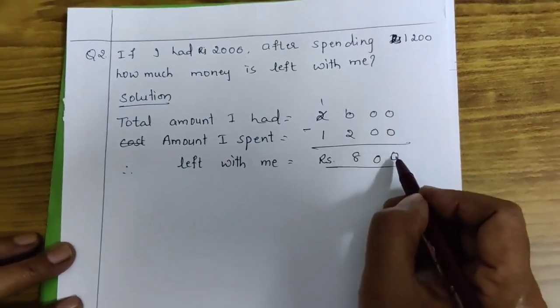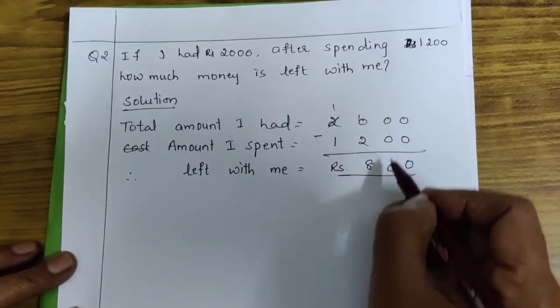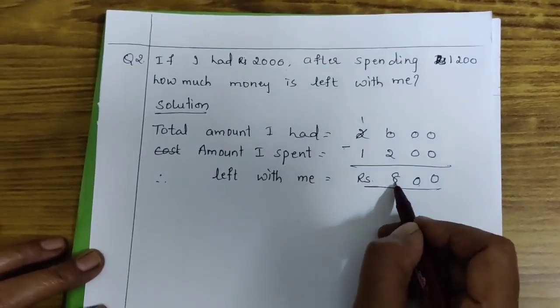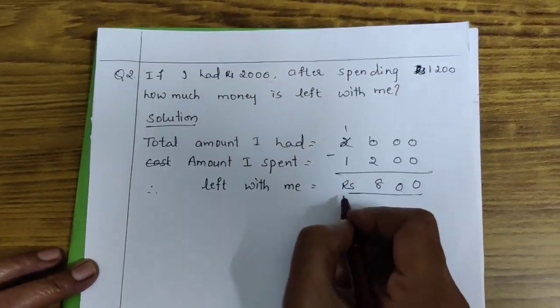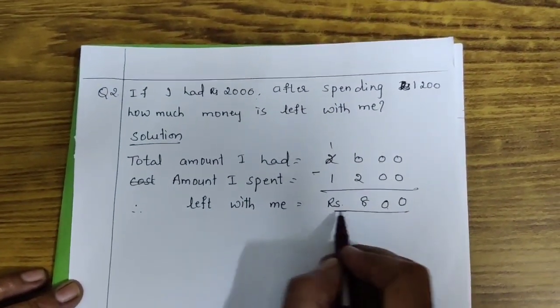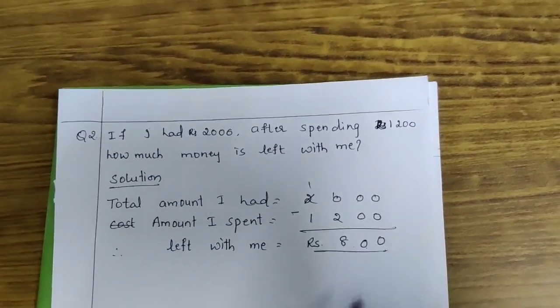0 minus 0, 0. 0 minus 0, 0. Take borrow from thousands place. 10 minus 2 is 8. 1 minus 1 is 0. So, left with me. How much is left with me children? Rs. 800.